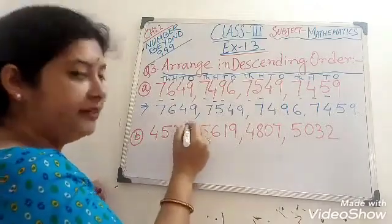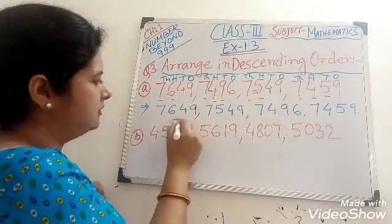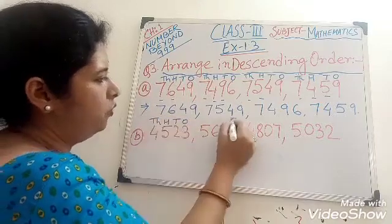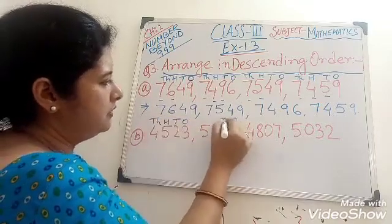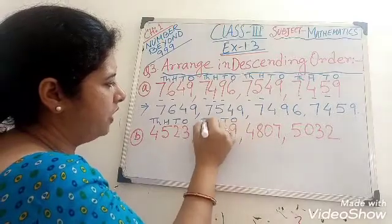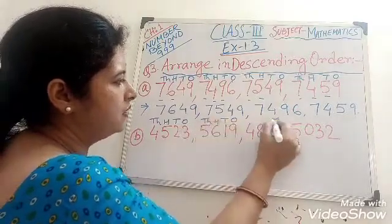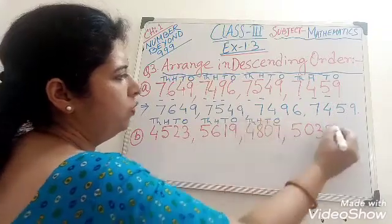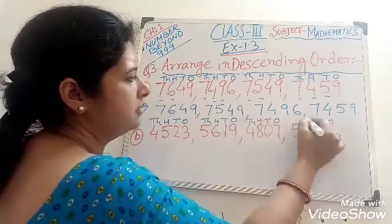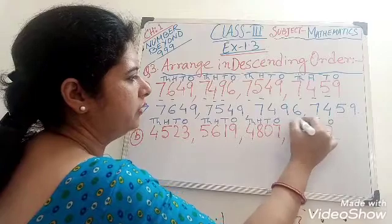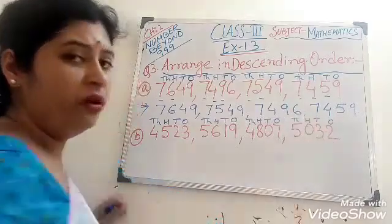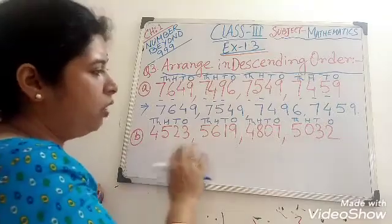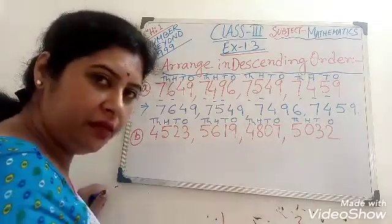Again we write down once, tens, hundred, thousand — for each of the four numbers. Now check out the bigger number. All numbers are four-digit numbers.